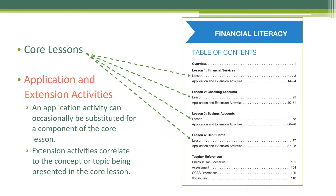Think of the core lessons as the required pieces of the curriculum. The number of core lessons can differ from unit to unit. Each unit also has a variety of application activities and extension activities. The time frame for each varies upon the lesson being taught. While an application activity can occasionally be substituted for a component of the core lesson, extension activities correlate to the concept or topic being presented in the core lesson. Both activities may be used to review a concept when the concept has not been mastered by the majority of the students.